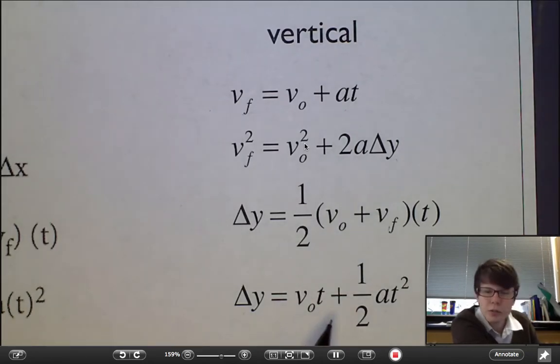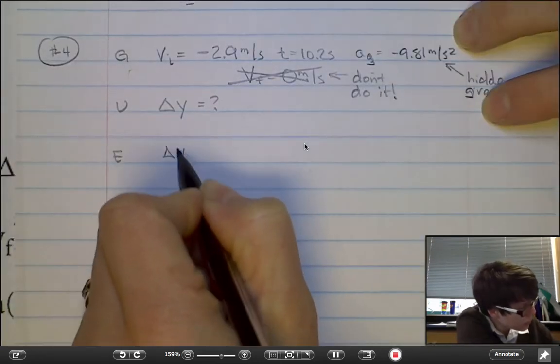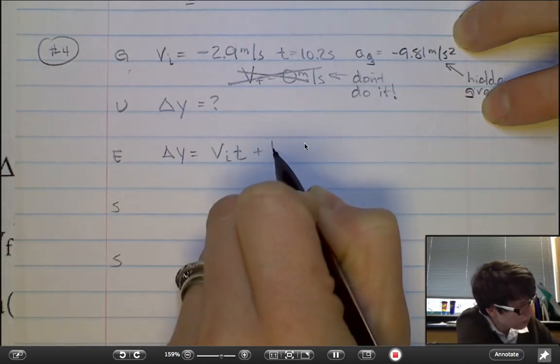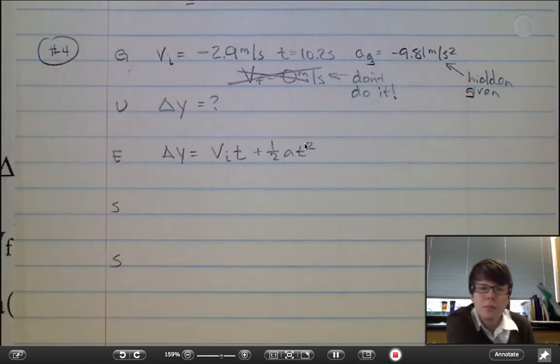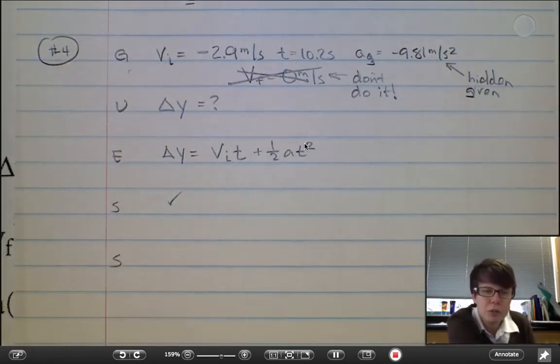Last equation. Delta y equals v_i times t plus one-half a t squared. Being asked for delta y, so the equation's already solved for the unknown.